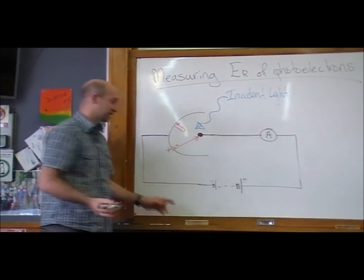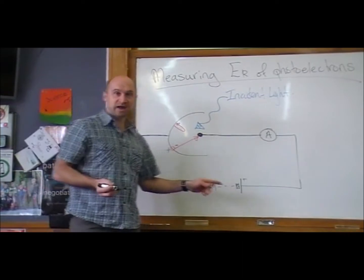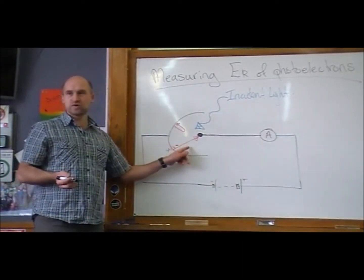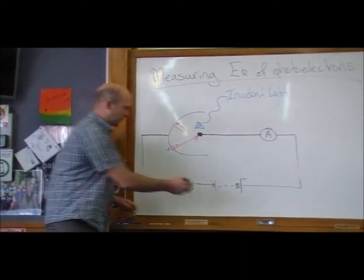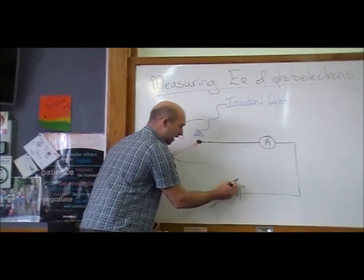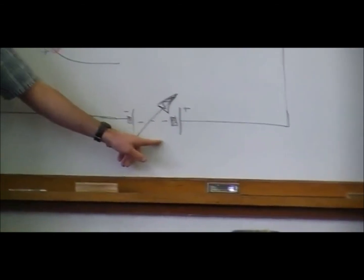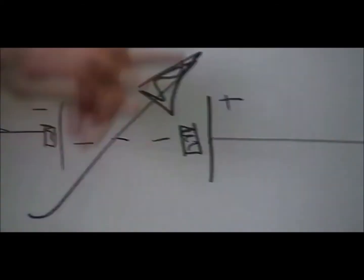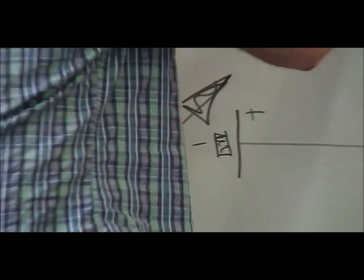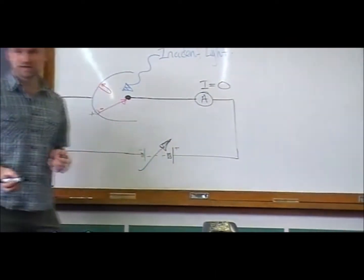That's the minus. And so this power pack now is trying to turn the electrons back even more. That's a variable power supply. And so all we do is we turn up the voltage on this power supply until we see the current equals zero.